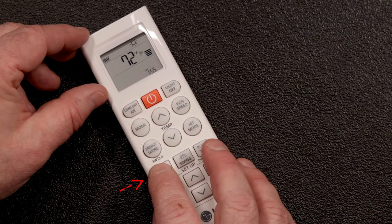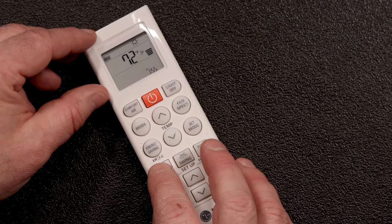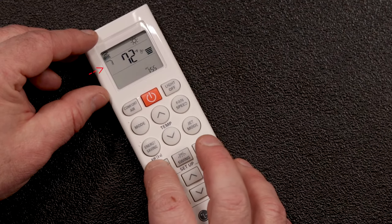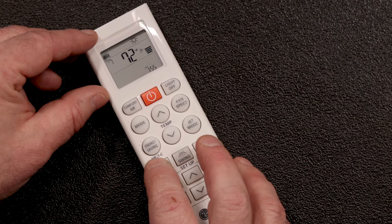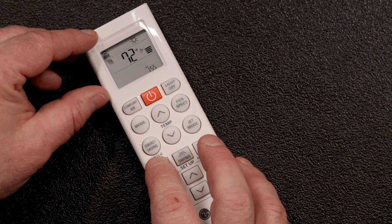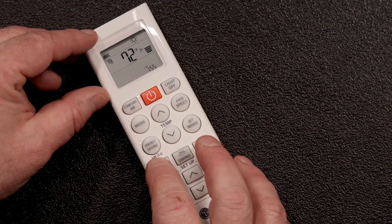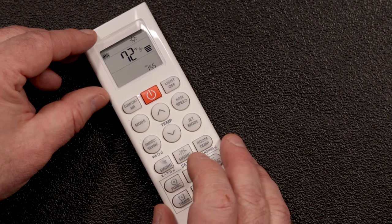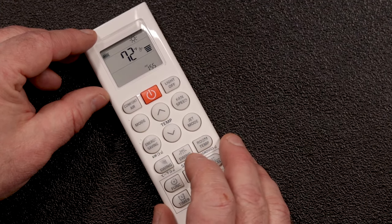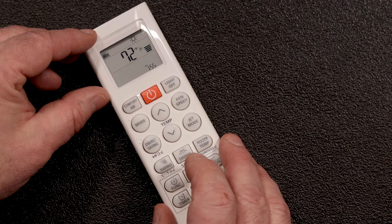The swing button on the left controls the vertical louvers. These can be adjusted between downward and horizontal. They can also be set to oscillate. If the vertical swing indicator is not visible on the LCD screen, that means that the louvers will adjust automatically to the recommended position for heating or cooling.